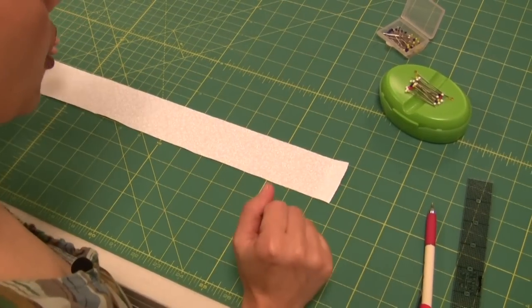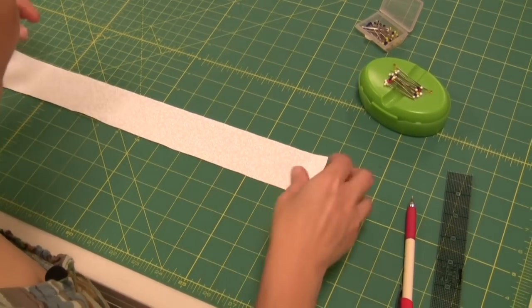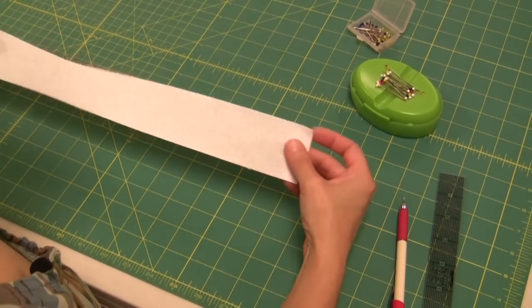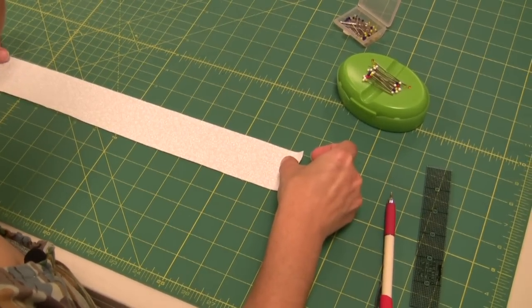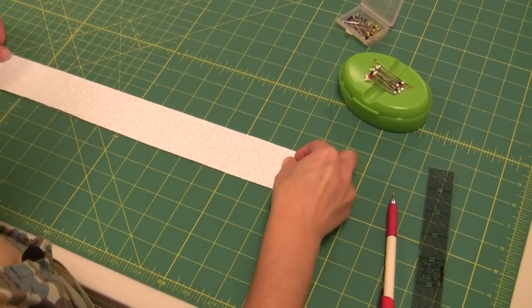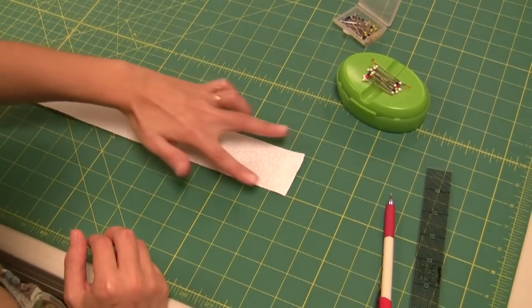So we're going to join our strips together for borders or for doing your binding. I'm going to start by taking my first strip and laying it on my mat, lining it up with my grid. This strip is laid horizontally.